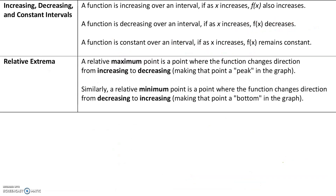Now we're going to talk about increasing, decreasing, and constant intervals. A function is increasing over an interval if as x increases, f(x) also increases. It's decreasing if as x increases, f(x) decreases. A function is constant if as x increases, f(x) remains constant. A relative maximum is a point where the function changes direction from increasing to decreasing, making that point a peak in the graph. A relative minimum is a point where the function changes direction from decreasing to increasing.